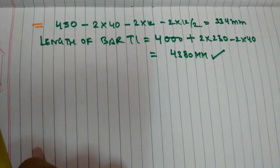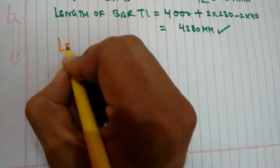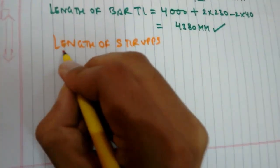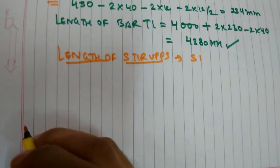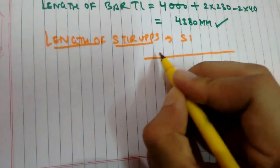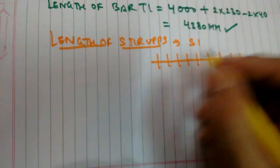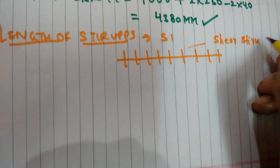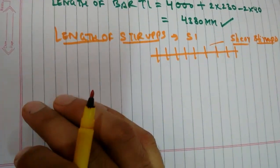Now we have to calculate the length of stirrups. The length of stirrups S1 — these are the shear stirrups, also called shear stirrups.